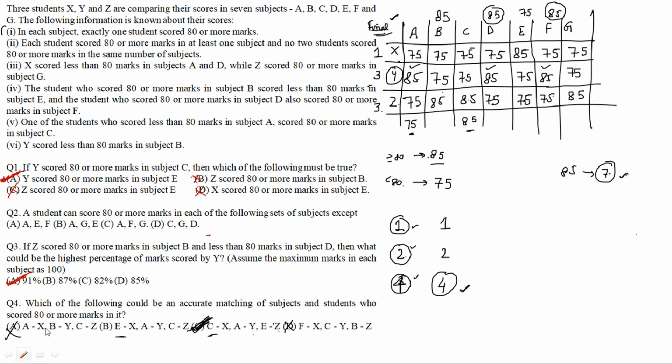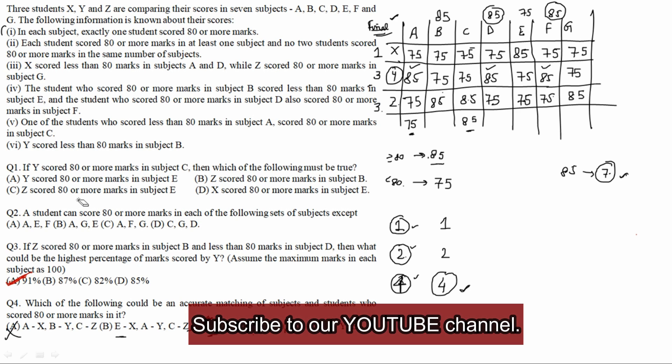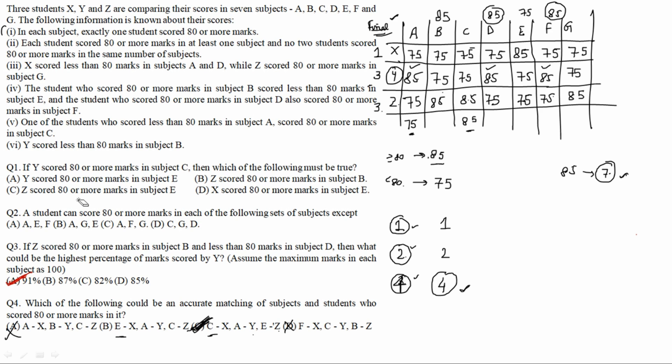For the second question, I will proceed in the same way — check each option in order and verify against the base table conditions. It is a time-taking process because you must use every condition. Without checking each point carefully, these questions cannot be solved. The key advice remains: never change the final base table; always use a separate table for each question's extra information.